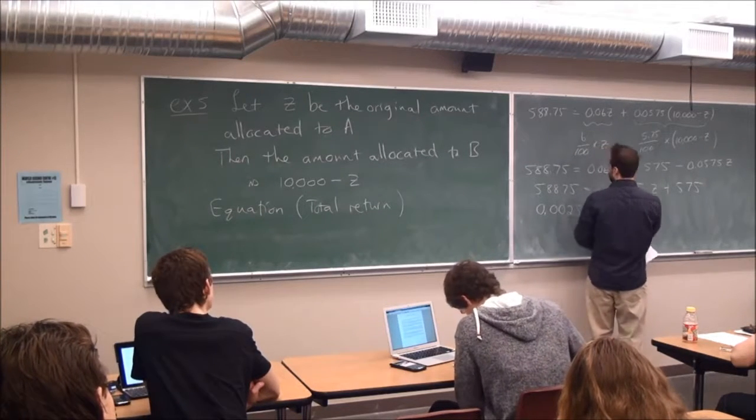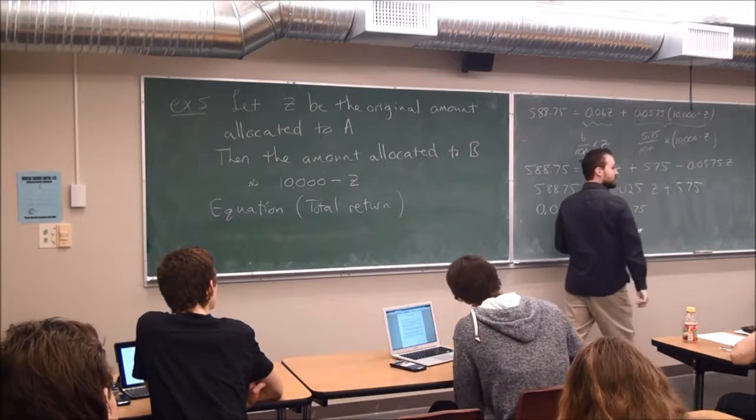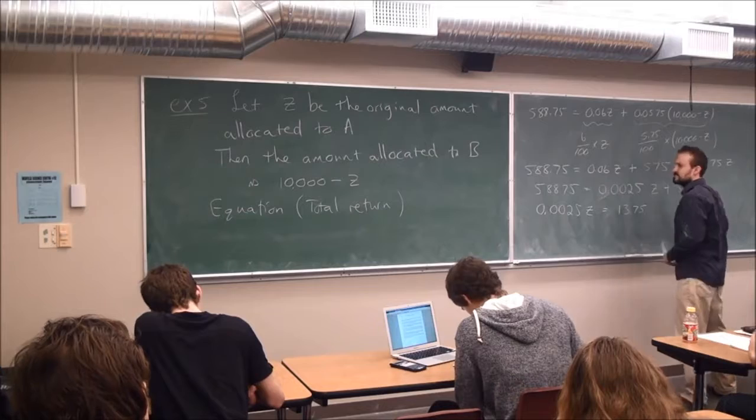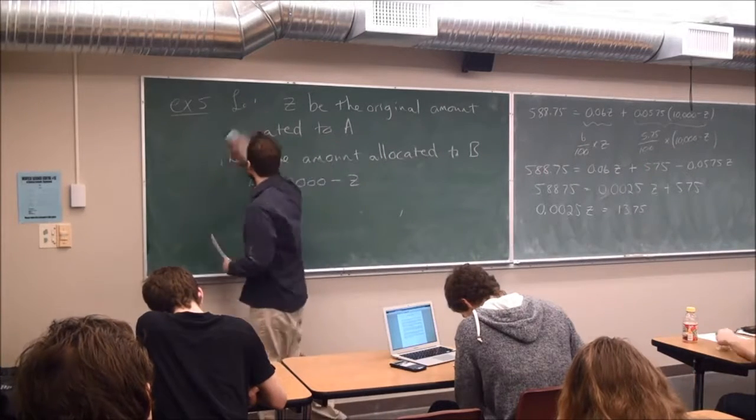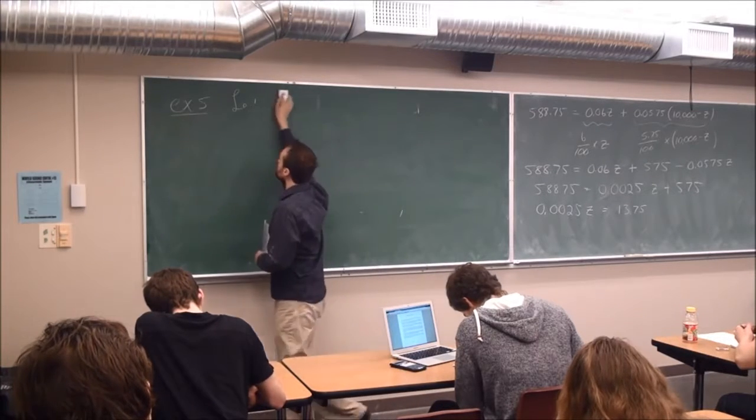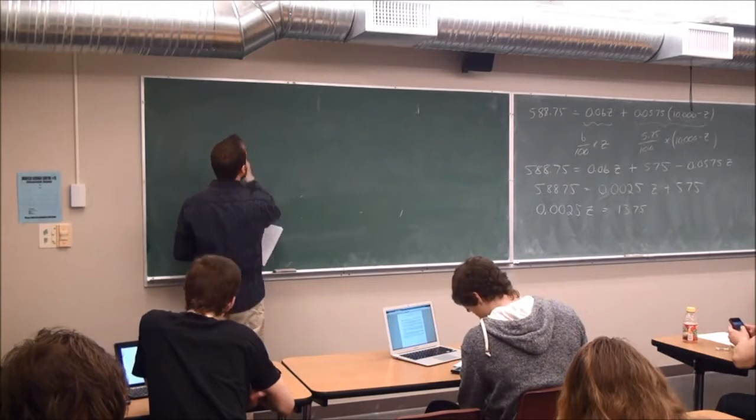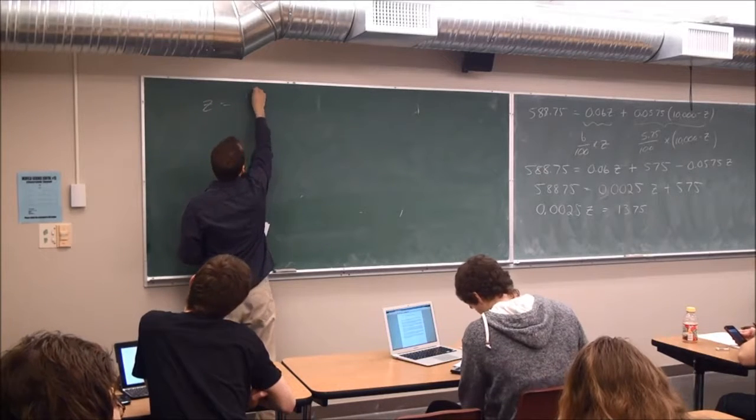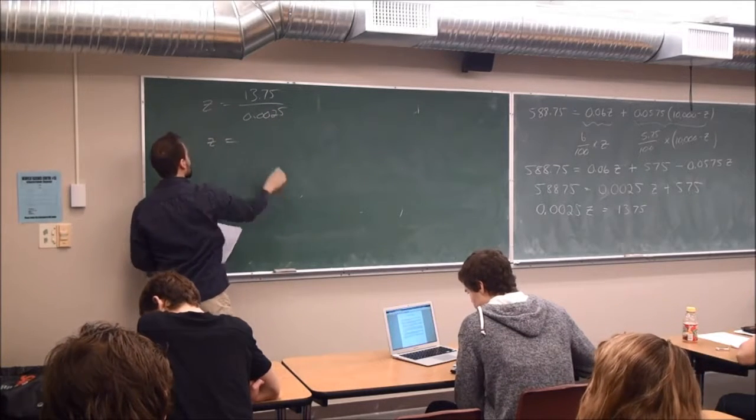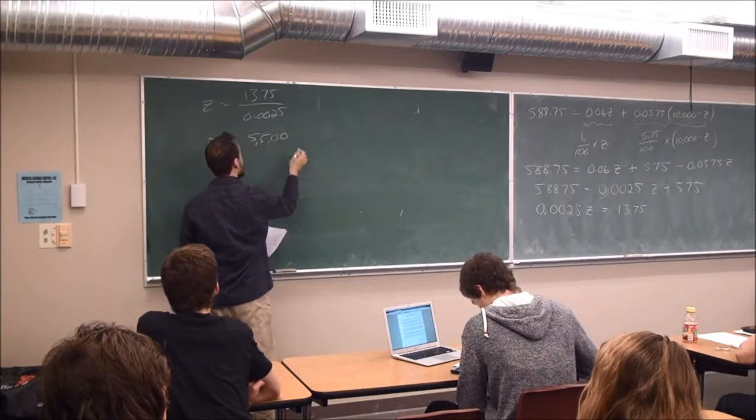The variable on the left. And I'm subtracting 588.75 minus 575. Let's hope that is, what is it, 13. Is that right? And I'm essentially done. Divide both sides by 0.0025. 13.75 divided by 0.0025 is equal to 5500.